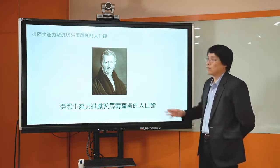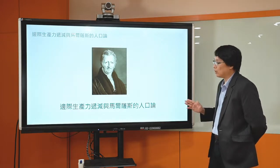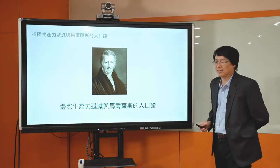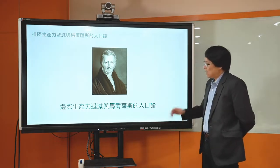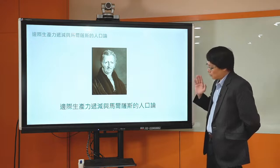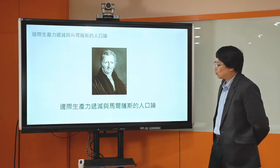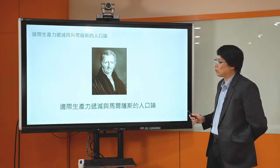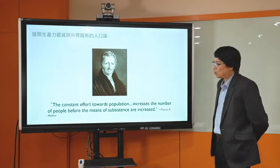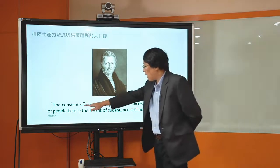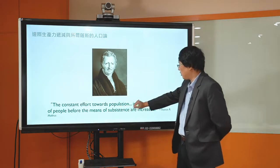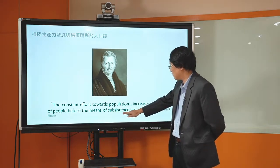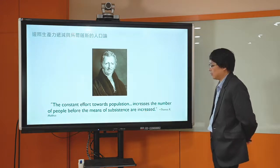这个现象甚至可以拿来讨论人类长期的历史变迁。今天这一讲我们就要来谈马尔萨斯的人口论，他怎么用边际生产力递减率来讨论长期的历史变迁。马尔萨斯是从18世纪活到19世纪的一个英国人，是政治学家也是人口学家。他提出了人口论，这个人口论非常有名。他说：The constant effort toward population increases the number of people before the means of subsistence are increased。